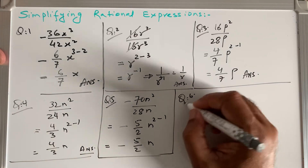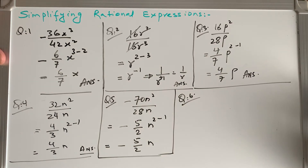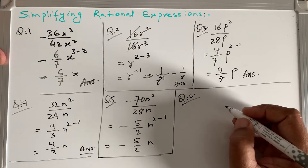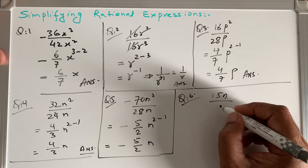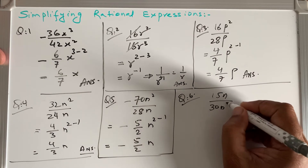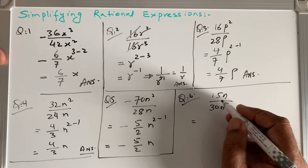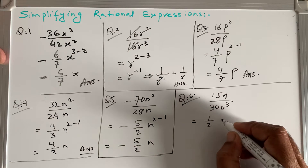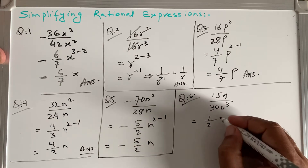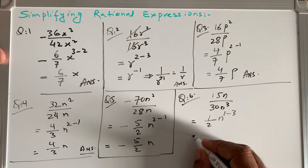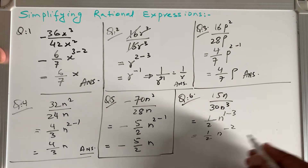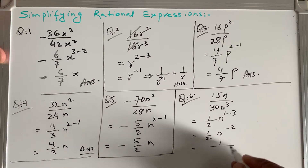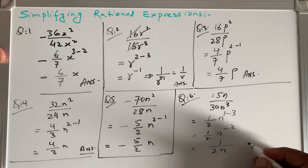Question 6: 15n / 30n³. We find the common factor: 15 × 1 = 15 and 15 × 2 = 30, so we have 1/2. For the exponent: n^(1-3) = n^(-2). We don't want a negative exponent, so it goes into the denominator. The answer is 1 / (2n²).